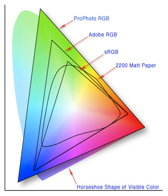HSL — hue, saturation, lightness/luminance — also known as HLS or HSI (hue, saturation, intensity), is quite similar to HSV, with lightness replacing brightness. The difference is that the brightness of a pure color is equal to the brightness of white, while the lightness of a pure color is equal to the lightness of a medium gray.